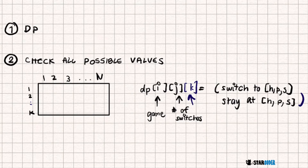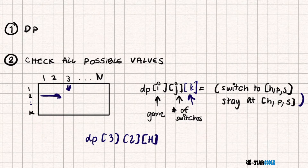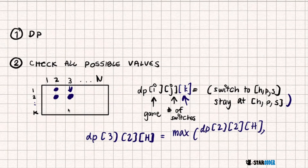Let's play out an example. Let's assume I'm working on DP[3][2][Hoof]. What this means is I'm currently on game 3, I've made two swaps, and the current move Bessie is playing is Hoof. I have two choices. The first choice is I assume the last round I already did Hoof — since I didn't swap, I look at DP[2][2][H], meaning the last game was game 2, two swaps, same move.